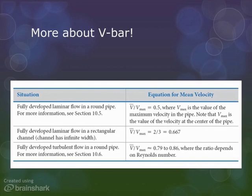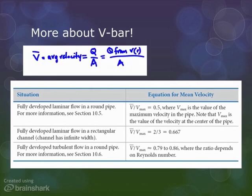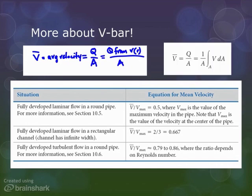So, next, more about V bar. Remember we said that one way to get V bar was to divide Q over A, and that Q might vary as a function of r? Well, this table is kind of a cheat sheet for what the value of V bar will be for different types of velocity distributions.